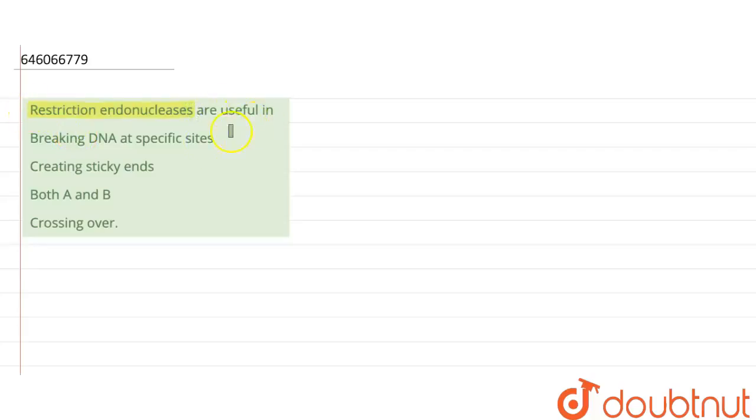Restriction endonucleases are useful in - the options are: breaking DNA at specific sites, creating sticky ends, both A and B, or crossing over.